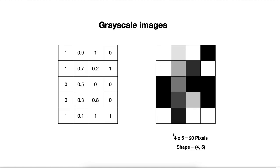We still have the same representation: 4 pixels in each row and 5 pixels in each column, which means we have a resolution of 4 times 5 and a total of 20 pixels, or a size of 20 pixels. If we represent them as arrays or NumPy arrays, the shape will be 4 and 5, with 4 cells for each row and 5 cells for each column.